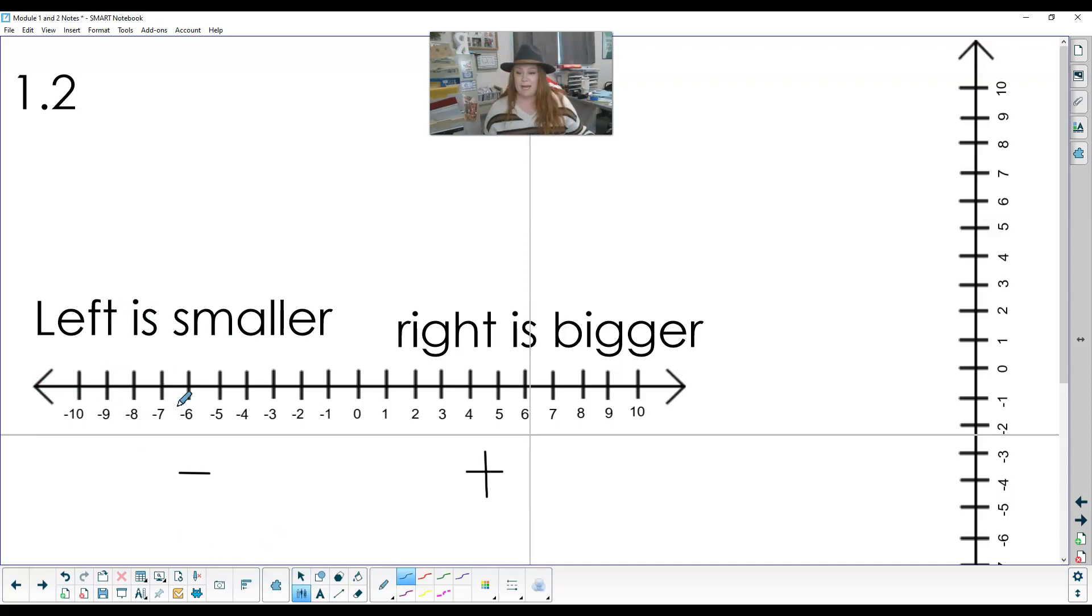So if I am comparing negative 6 and 1, which one's farther to the right? 1 is, and 1 is positive. This is negative. That's a pretty good clue right there. This is positive. It's bigger than anything that's negative. So even though 6 sounds bigger, it's negative. You have lost 6. You do not have 6 of those things. This person has 1. So if I'm comparing those, negative 6 is less than 1. So go ahead and graph those and write that with me here. Negative 6 is less than 1. I could also say 1 is greater than negative 6.